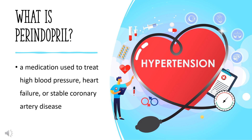Perindopril is a medication used to treat high blood pressure, heart failure, or stable coronary artery disease. As a long-acting ACE inhibitor, it works by relaxing blood vessels and decreasing blood volume. As a prodrug, perindopril is hydrolyzed in the liver to its active metabolite, perindoprilat. It was patented in 1980 and approved for medical use in 1988.